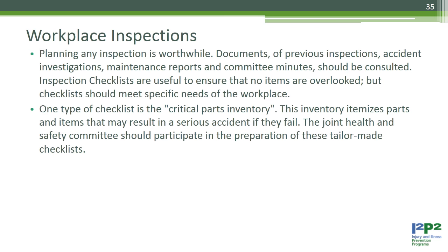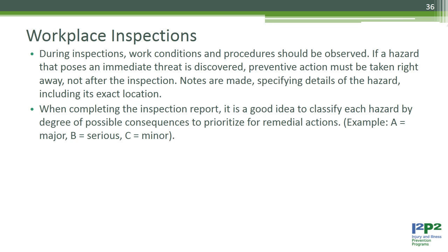Planning any inspection is worthwhile. Documents of previous inspections, accident investigations, maintenance reports, and committee minutes should be consulted. Inspection checklists are useful to ensure that no items are overlooked. One type of checklist is the critical parts inventory, which itemizes parts that may result in serious accidents if they fail. The Joint Health and Safety Committee should participate in preparing these checklists. During inspections, work conditions and procedures should be observed, and if a hazard posing an immediate threat is discovered, preventative action must be taken right away, not after the inspection.